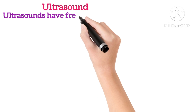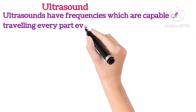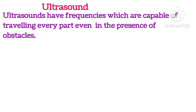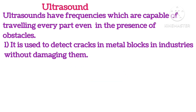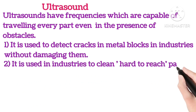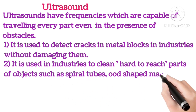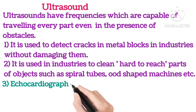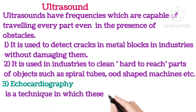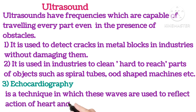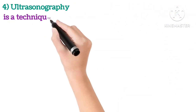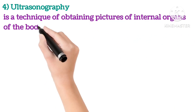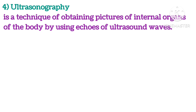Ultrasound: Ultrasonic waves have frequencies capable of travelling through obstacles. It is used to detect cracks in metal blocks in industries without damaging them, and to clean hard-to-reach parts of objects such as spiral tubes or machinery. Echocardiography is a technique in which ultrasonic waves are used to reflect the action of the heart and form images. Ultrasonography is a technique of obtaining pictures of internal organs of the body by using echoes of ultrasonic waves.